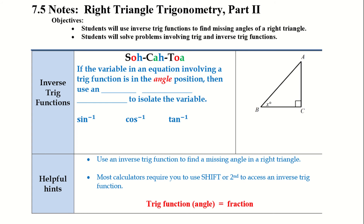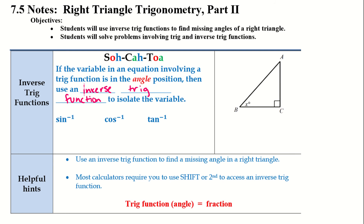Today we're learning about inverse trig functions. If the variable in an equation involving a trig function is in the angle position, then use an inverse trig function to isolate the variable. Think of it like x plus 5 equals 10 — the inverse of plus 5 is minus 5. Similarly, we have sine to the power of negative 1, cosine to the power of negative 1, and tangent to the power of negative 1. This negative 1 just shows that it's the inverse, not just the trig function itself.